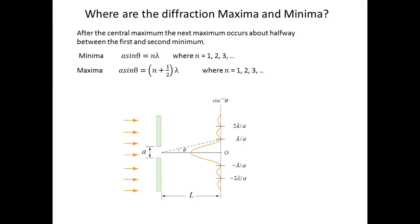Now where are the diffraction maxima and minima? After the central maximum, the next maximum occurs about halfway between the first and second minimum. So as we can see here at the center, the central maximum is there, and by these conditions we get the next maxima and minima.